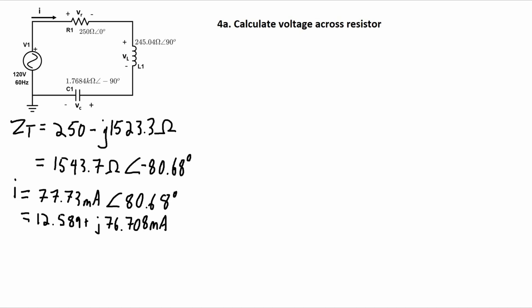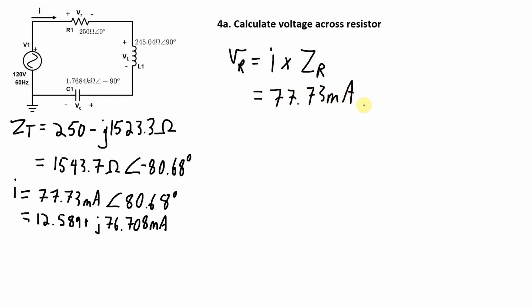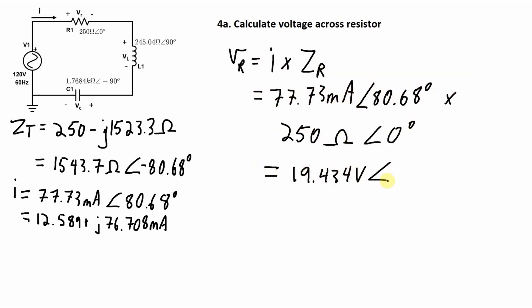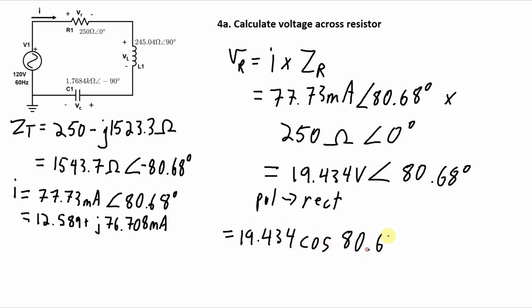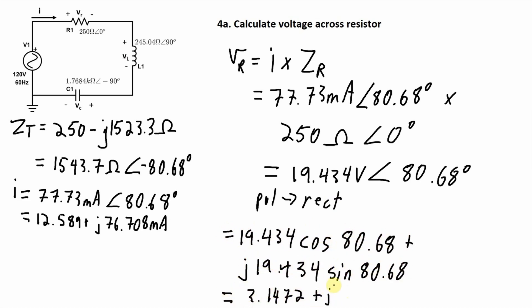For these final steps to calculate the voltages across the components, I'm going to take this current and multiply it by the impedance of each one of the components. To calculate the voltage across the resistor, I multiply that current times the impedance of the resistor: 77.73 milliamps times 250 ohms gives the magnitude, and adding the phase angles gives 80.68 degrees. I can also convert this from polar coordinates to rectangular coordinates.